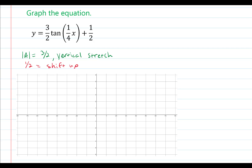Finally, we have to check our period. So t is equal to the fundamental period, which is pi divided by omega. And omega in this case is one fourth. When we simplify this expression, we get four pi. As a result, we need to recalculate the new vertical asymptotes or new domain. So step number one is to calculate the new domain, which will give us the new vertical asymptote.